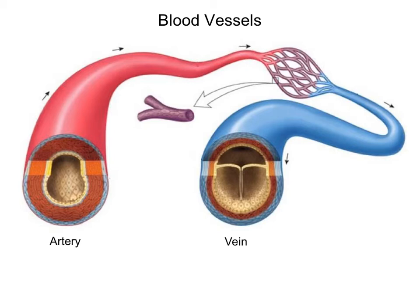And finally the last type of blood vessel is called the capillary. The capillary is made up of simple squamous epithelial tissue which means it's very thin. This is good for gas exchange. You'll find these capillary beds surrounding tissues and in the lungs where gas exchange occurs.